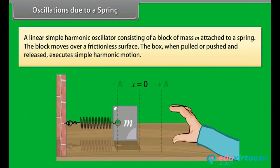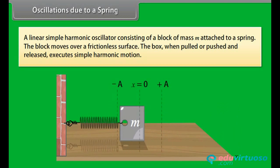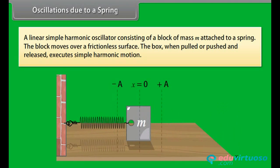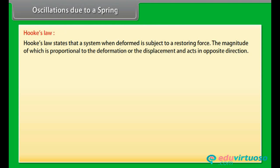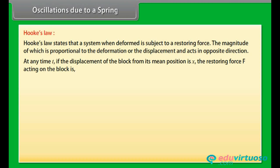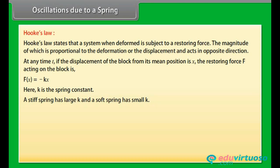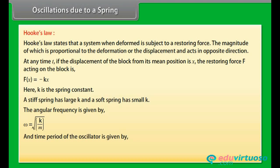Oscillations due to a spring: a linear simple harmonic oscillator consists of a block of mass M attached to a spring, moving over a frictionless surface. When pulled or pushed and released, it executes simple harmonic motion. Hooke's law states that a deformed system is subject to a restoring force proportional to the displacement and acting in the opposite direction: F(x) = −Kx, where K is the spring constant. The angular frequency is ω = √(K/M) and the time period is T = 2π√(M/K).